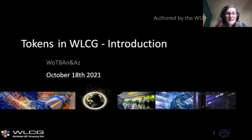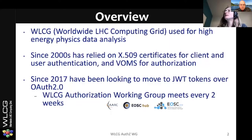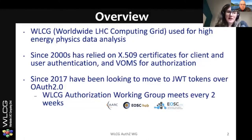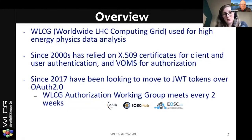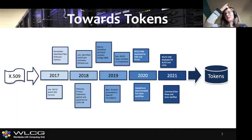Welcome to this session on WLCG. My name is Hannah. I work at CERN and I'm one of the many people who have put these slides together, working on behalf of the WLCG authorization group, trying to push WLCG towards tokens. For anyone who doesn't know, the Worldwide LHC Computing Grid is used for high energy physics data analysis. Since the 2000s, we've relied on X.509 certificates for client and user authentication, and VOMS for authorization. Since 2017, we've been looking to move to JSON Web Tokens over OAuth 2.0, meeting roughly every two weeks since then.